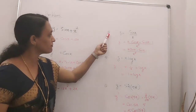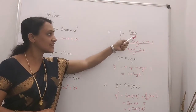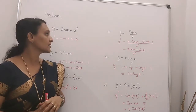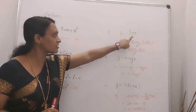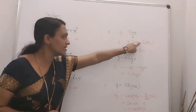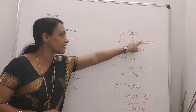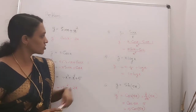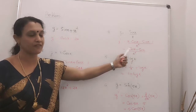Question 4: y is equal to sin x by x. This is of the form u by v, so we apply the quotient rule. y dash equals denominator into derivative of numerator — x into cos x — minus numerator into derivative of denominator — sin x into 1 — whole divided by denominator squared. Simplifying, the answer is x cos x minus sin x, divided by x squared.